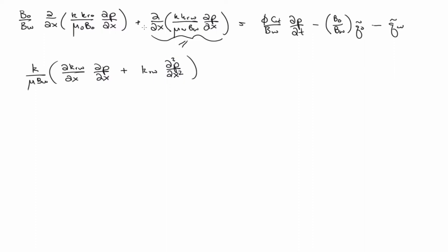If you did that to both terms, grouped all the coefficients out in front — the things I'm calling constants — ultimately you'd have some equation like: some coefficient a times dp/dt equals some coefficient b times dp/dx plus some coefficient c times d²p/dx². I'm just grouping all those terms because the exact form isn't really important to the discussion here. Does anybody know, in a very generic mathematical sense, what you'd call this equation?